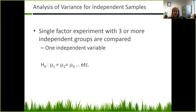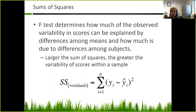Analysis of variance for an independent sample looks at a single-factor experiment with three or more independent groups being compared — there's only one independent variable, but you have three groups. The null hypothesis is that the mean of group 1 equals the mean of group 2, equals the mean of group 3. The test statistic for ANOVA is the F-test, which determines how much of the observed variability in the score can be explained by differences among the means and how much is due to differences among subjects. The larger the sum of squares, the greater the variability of scores within a sample.